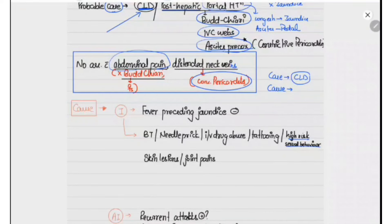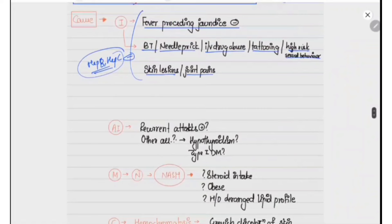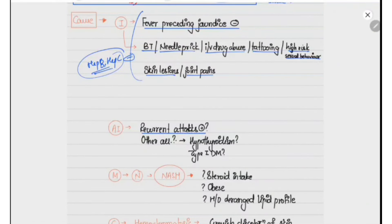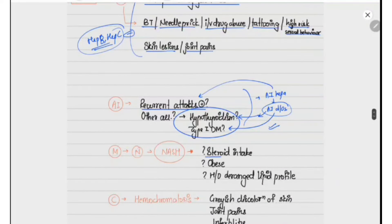To find the cause of CLD, we ask additional histories. We ask whether there is fever preceding jaundice, history of blood transfusion, needle prick injury, IV drug abuse, tattooing, high-risk behavior, or skin lesions or joint pains — all features that can be present in hepatitis B and C — which are absent in this case. We ask about recurrent attacks of jaundice or associated hypothyroidism or type 1 diabetes, which suggest autoimmune hepatitis — also absent. We ask about steroid intake, obesity, or deranged lipid profile, which can lead to non-alcoholic fatty liver disease — all absent here.